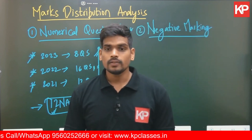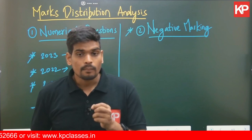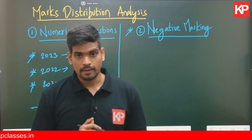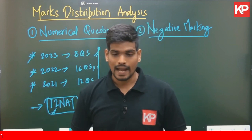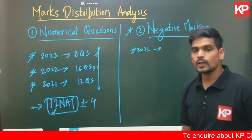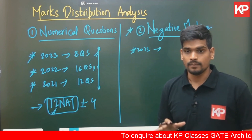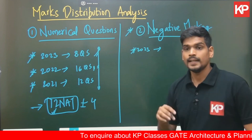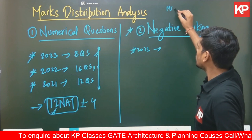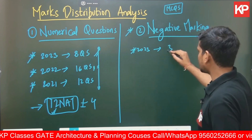Point number two is with respect to negative marking. There has also been a shift here. Comparing GATE 2022 and 2023, the number of multiple choice questions overall — that is, the number of questions with negative marking — has increased by approximately five percent. If you look at the GATE 2023 question paper, excluding general aptitude and considering only the core subject — Part A, Part B architecture and planning — the questions with negative marking are multiple choice questions only.